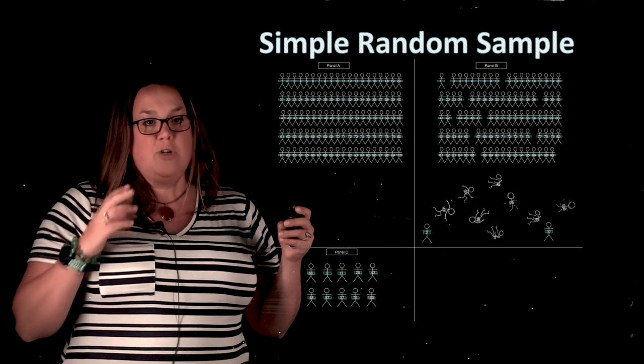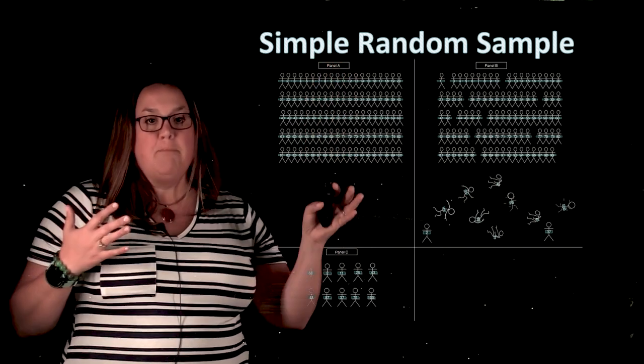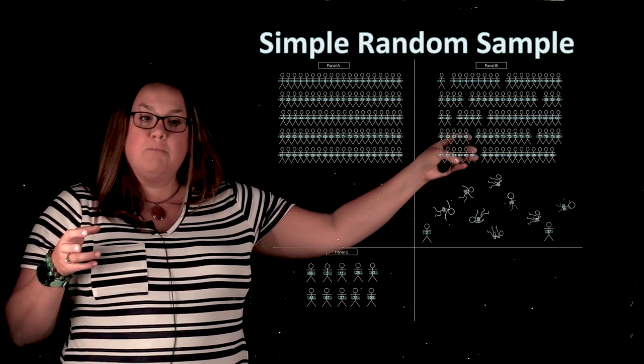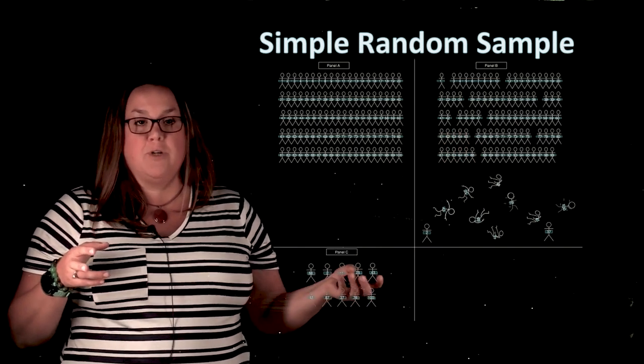Here you can see in this illustration from the textbook that we start with a population. So maybe we have a hundred individuals included and then randomly 10 individuals were selected out of that population.